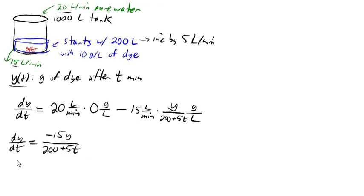And now we can look at initial condition. We know that at time 0, we started with 200 liters, 10 grams per liter, and so that is 200 liters times 10 grams per liter is 2,000 grams of dye at time 0. So there's the differential equation that we can solve to figure out how much dye is in the tank after t minutes.